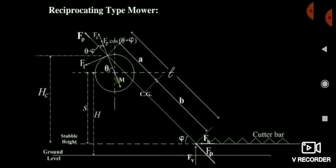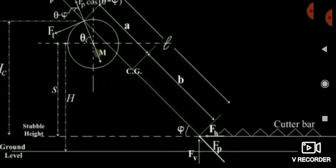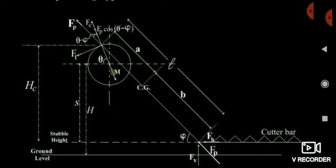Nothing big in this diagram. You can see here that the cutter bar is made, and the forces FV and FH are acting. FV is the vertical force, FH is the horizontal force, and Fp is the net force.